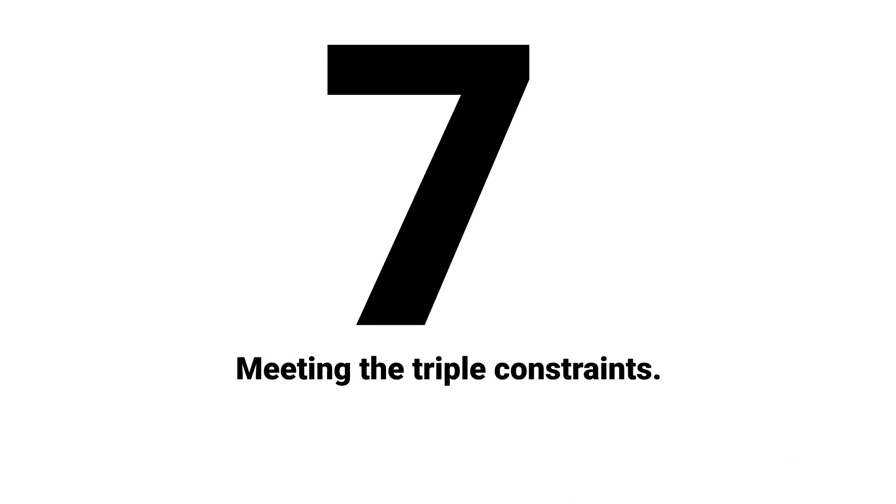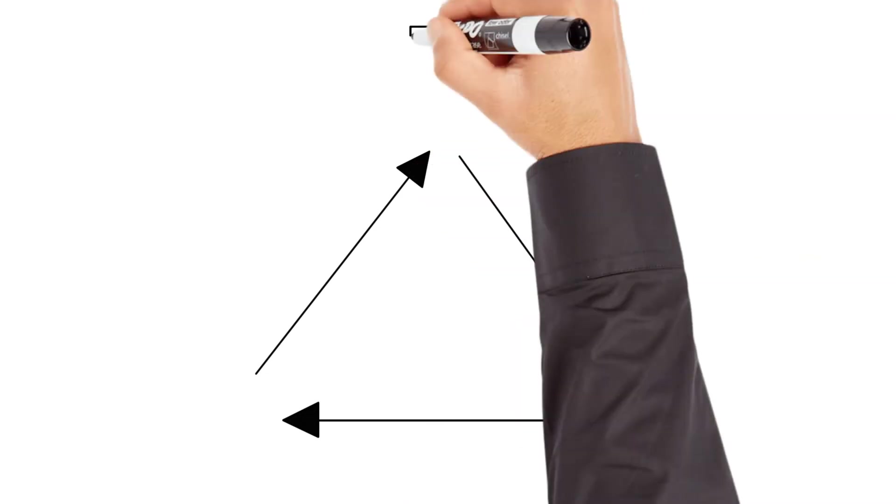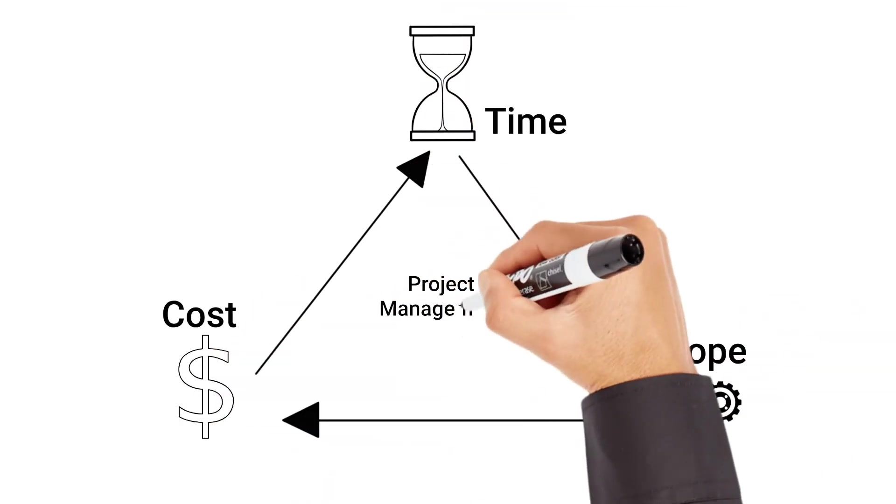Seventh one is to make sure the project is meeting the triple constraints of cost, time, and scope. The triple constraints, also known as the project management triangle, refers to the boundaries of time, scope, and costs that apply to every project.